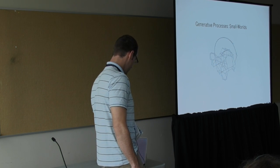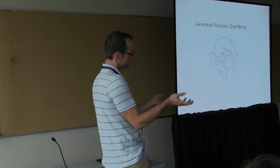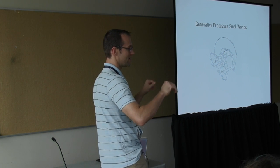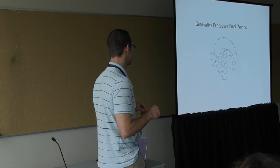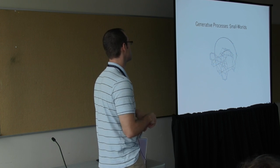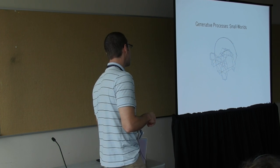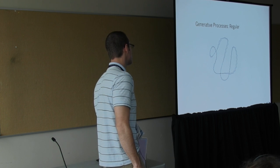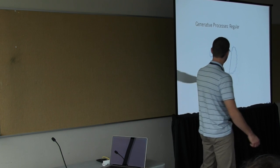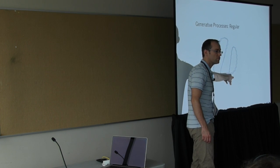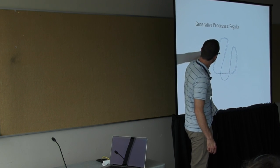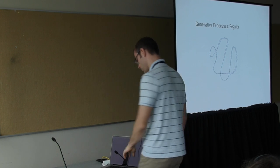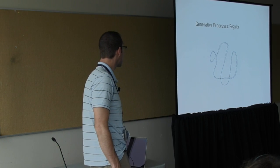Here's a small worlds network. It initially starts out with this kind of lattice structure and then it rewires randomly, building these sorts of local clumps of relationships. And then here's a regular network. You can't see the tight connections here, but everyone has the same degree. Where degree is just number of edges. It just loops around like a regular chain of connections.